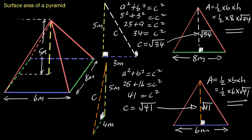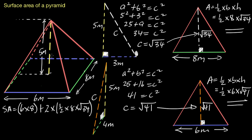Now we can finish up by adding all the different faces together. The surface area for the entire pyramid starts with the base, which is just a rectangle: six times eight. Then we add the two right-side triangles — two times half times eight times the square root of 34. Plus we add the two front-and-back triangles — two times half times six times the square root of 41.